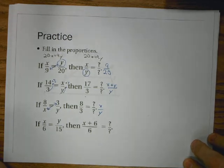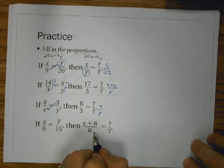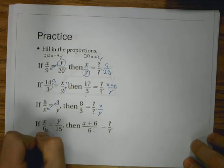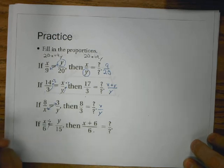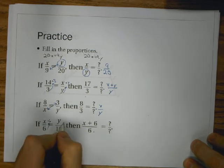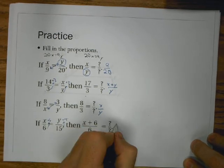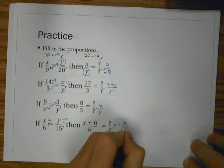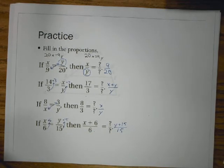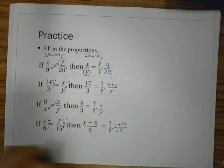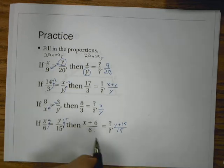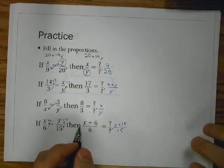Next: 8/x = 3/y. This one looks familiar — I'm again switching the means (3 and x), so the result is x/y.